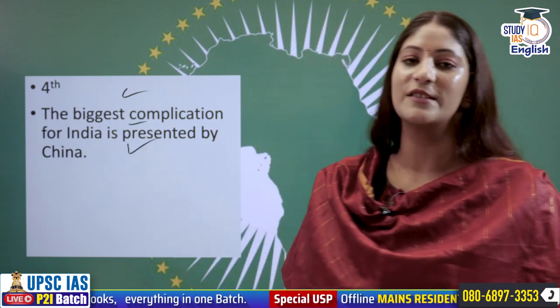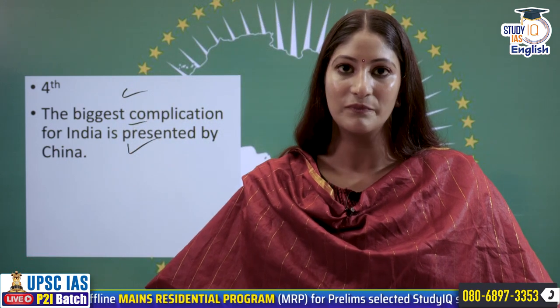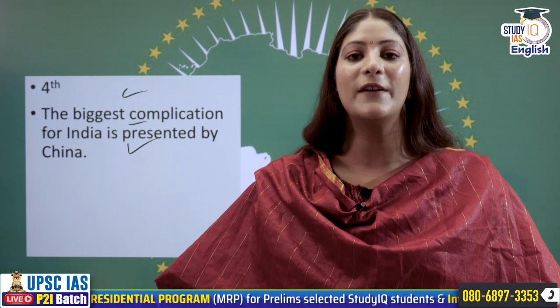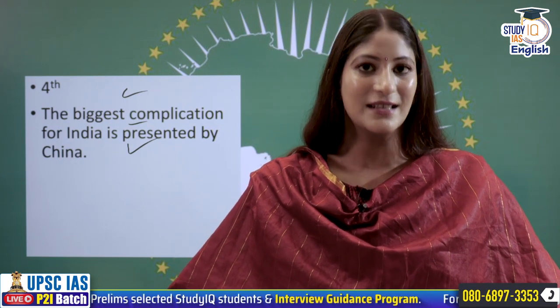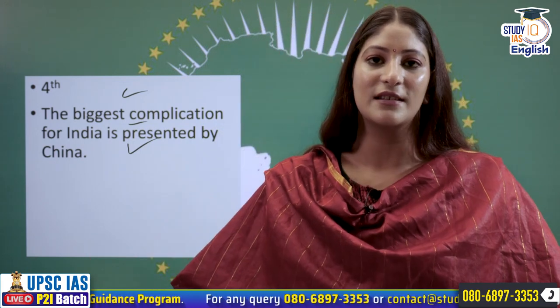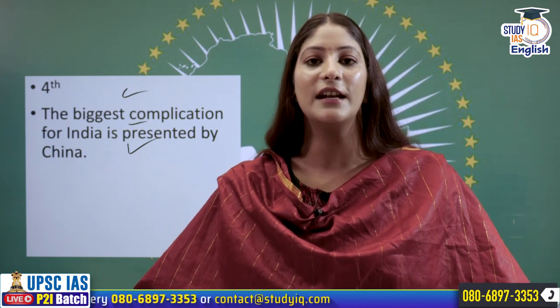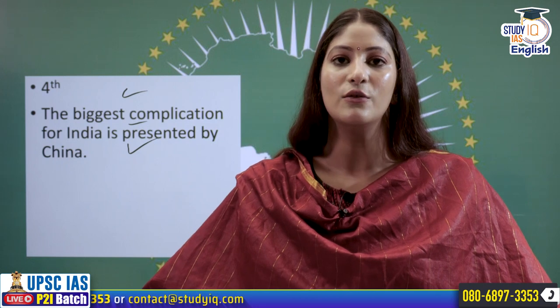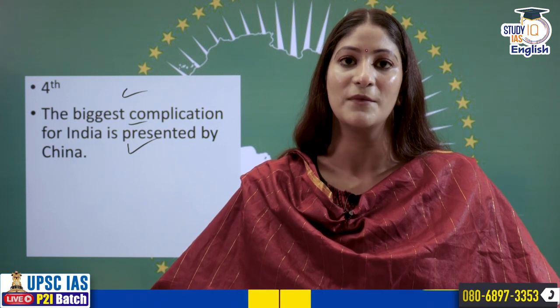The fourth and biggest complication for India is presented by China. China should have been represented by President Xi Jinping, but Chinese Premier Li Qiang has come instead. The absence manifests that China is trying to show it is not on good terms with India. Although the President said that a stable relationship exists between India and China when questioned about his absence from the G20. Maybe the Chinese President wants to show that the G20 is not worthy enough, specifically if being conducted under India's presidency. The Premier Li Qiang has to do a lot to bridge the gap between India and China through the G20 summit.